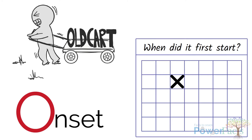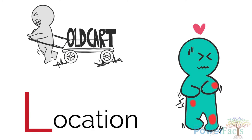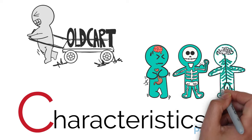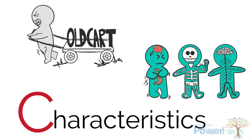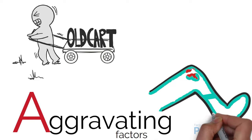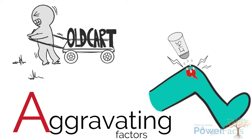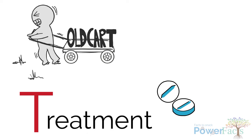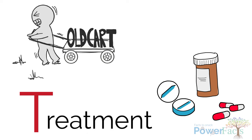L is for Location: where does it hurt? D is for Duration: how often does the pain occur and how long does it last? C is for Characteristics: how does the pain feel like? A is for Aggravating factors: what makes the pain worse for the patient? R is for Redeeming factors: what makes the pain better?